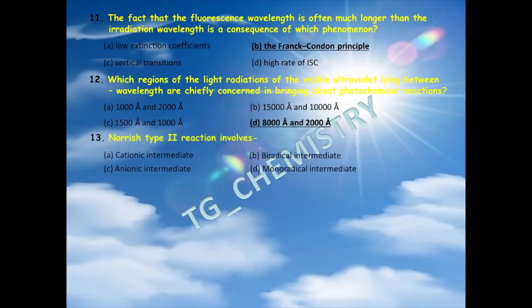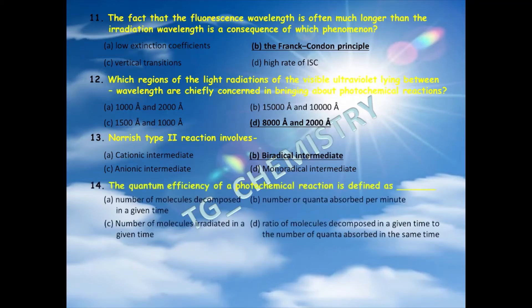Thirteenth question: Norrish type 2 reaction involves which intermediate? Options: A) cationic intermediate, B) biradical intermediate, C) anionic intermediate, D) monoradical intermediate. In Norrish type 2 reaction, the carbonyl group is homolytically cleaved to form radicals and then gamma hydrogen is abstracted, so the biradical intermediate is the right answer — option B.